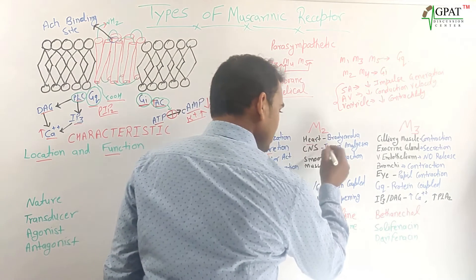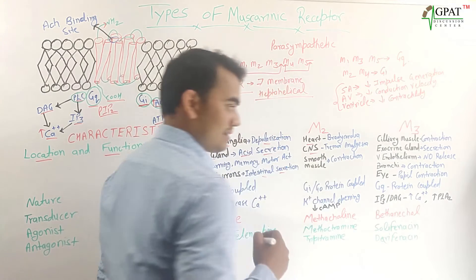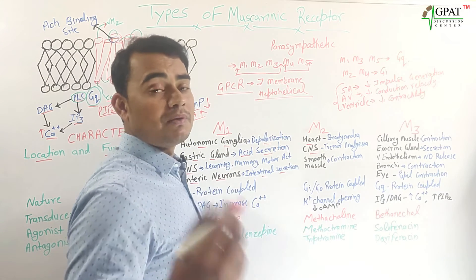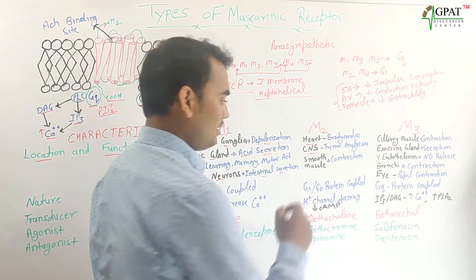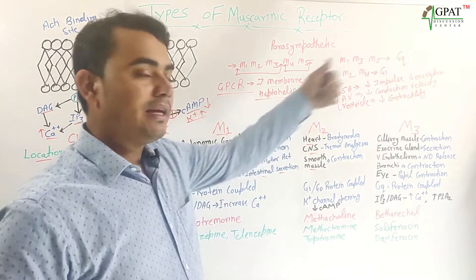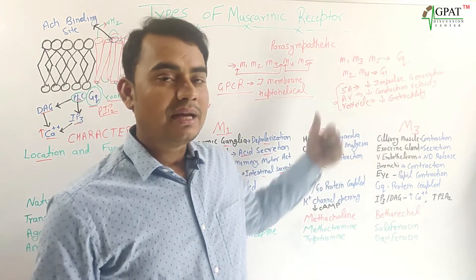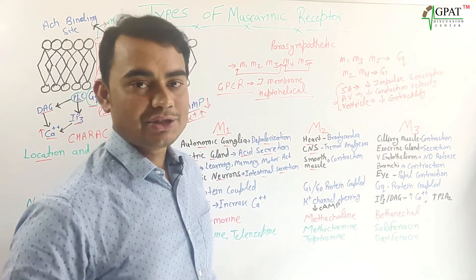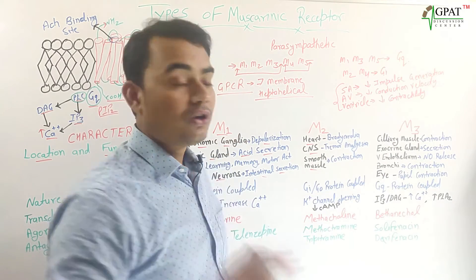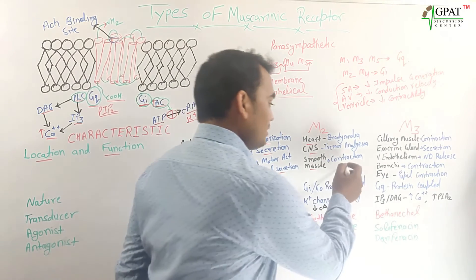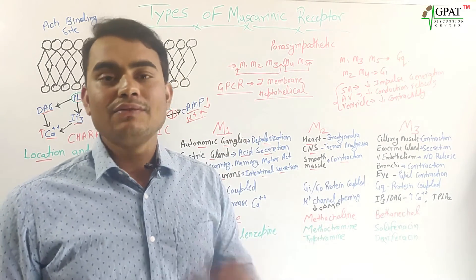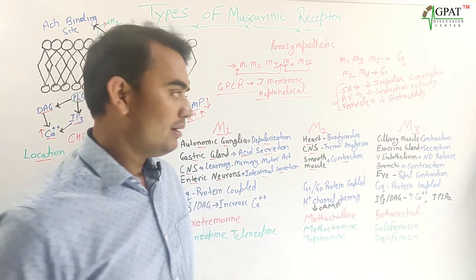M2 receptors are also present in the CNS, where they are responsible for tremor and analgesia. Similar to M3 receptors, M2 receptors have a contractile action on smooth muscles, and this contraction is carried out through activation of potassium ion channels.